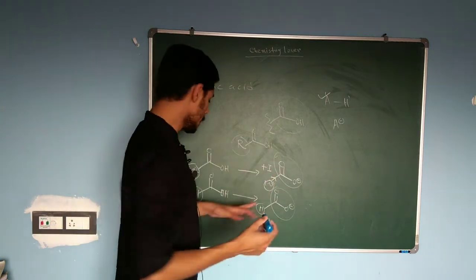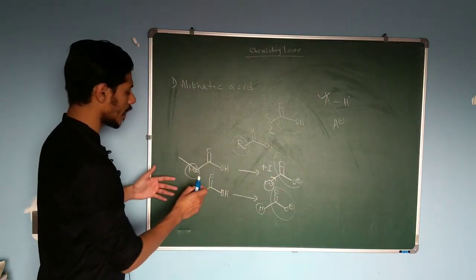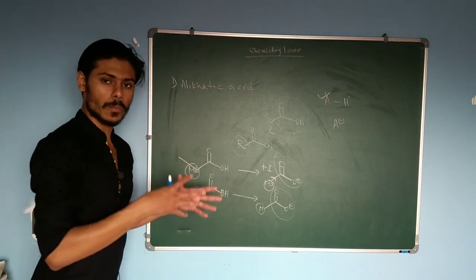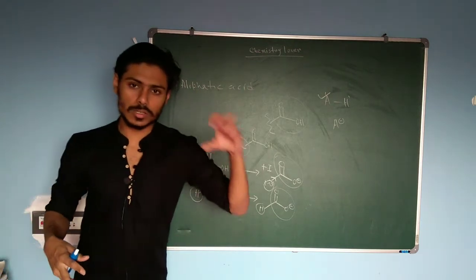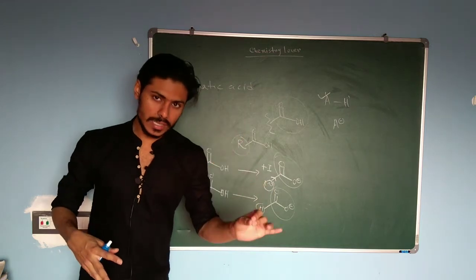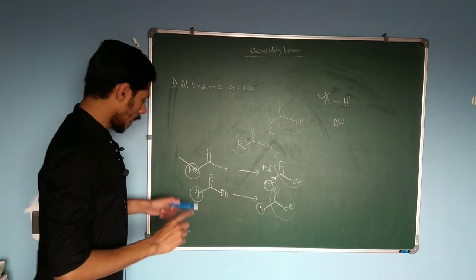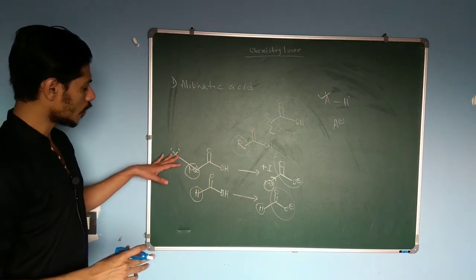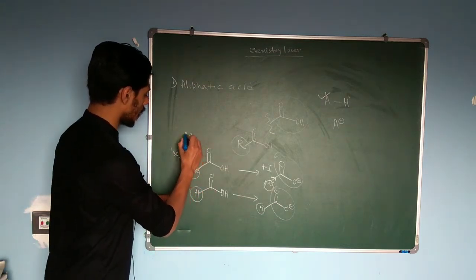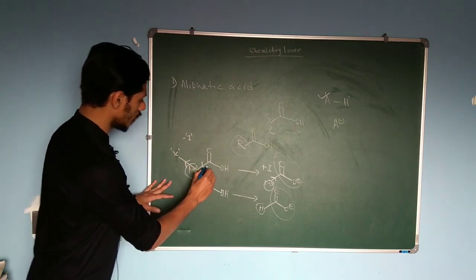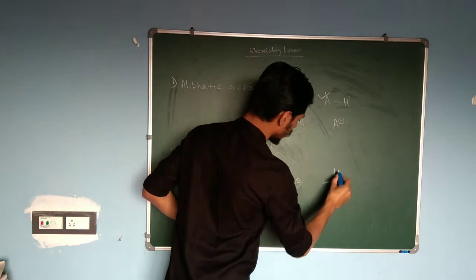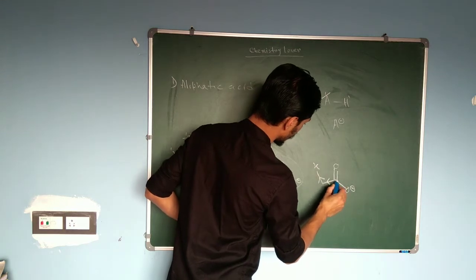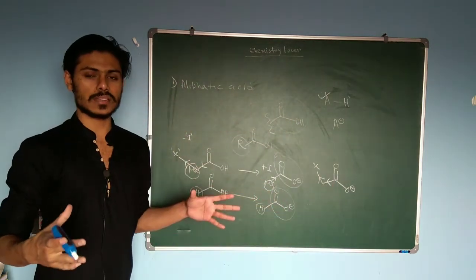Similarly, if you put an ethyl group the acidity decreases even further, because the ethyl group is a stronger electron-pushing group than methyl. Introducing any electron-donating group reduces acidity. What if we introduce a halogen? Halogens show a −I effect, meaning they withdraw electrons. From the negatively charged conjugate base, the halogen withdraws electron, stabilizing the system, and that is why acidity increases when halogens are present.